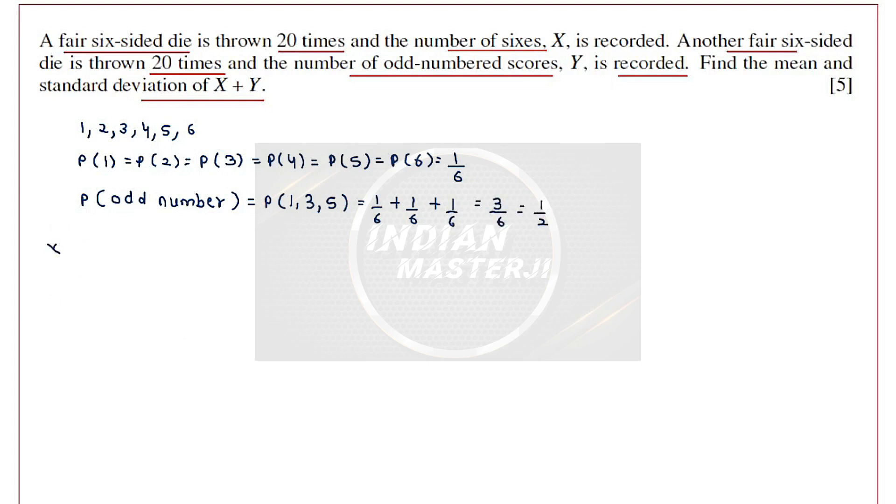Now X is the number of 6s in 20 throws. 20 is a finite number, and X is representing the number of 6s in those finite number of throws. So that means X follows binomial distribution with the parameters n, p, where n is 20 and p is 1 by 6, that is probability of getting a 6.